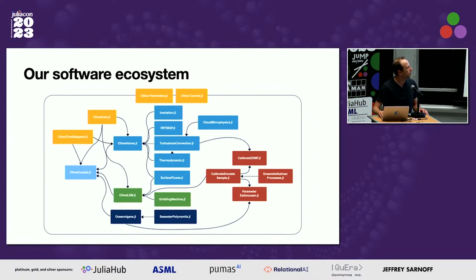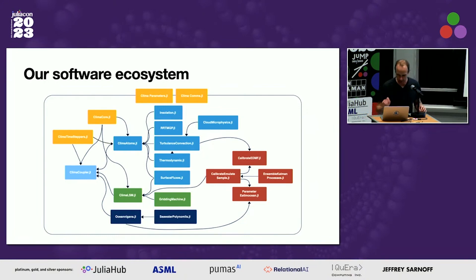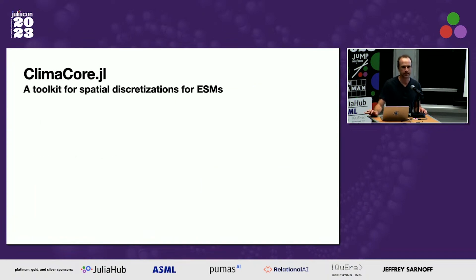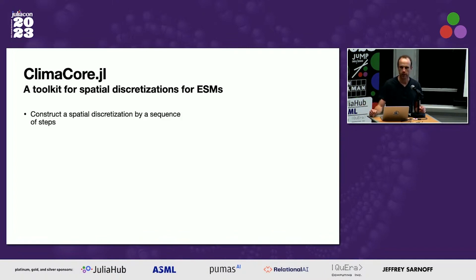We've been going a while now. We use a lot of Julia — there's a whole ecosystem we've built. I'm going to talk about one very tiny box called KlimaCore, and even then I'm only talking about a tiny aspect of it. KlimaCore is basically a toolkit for building spatial discretizations for Earth system models. The way to think about it is: spatial discretization is how we approximate stuff in space, as opposed to how we approximate stuff in time.